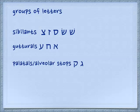The first group I have listed there is sibilants, and sibilants are the 's' sounds that you make between your teeth. The sibilants in Hebrew are shin (sh), sin, samech, zayin (z), and tzadi (tz). Those are all sounds you make in the front of your teeth.